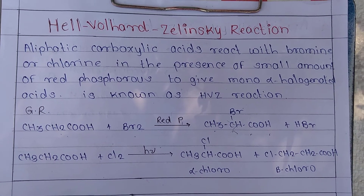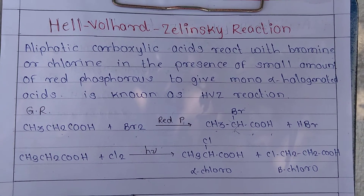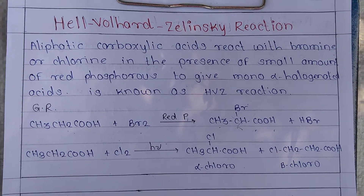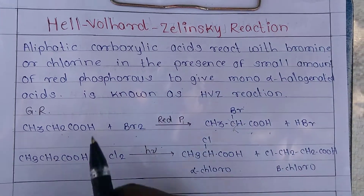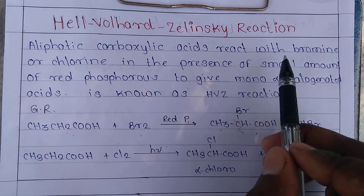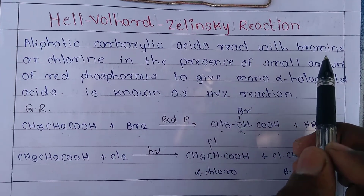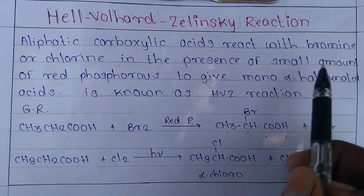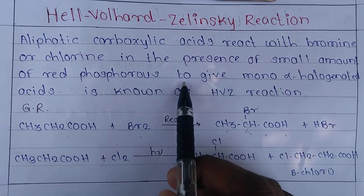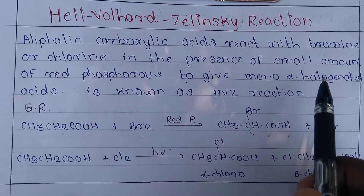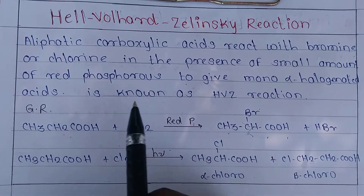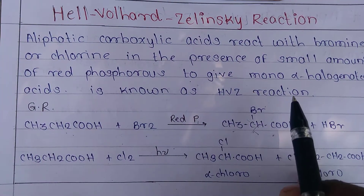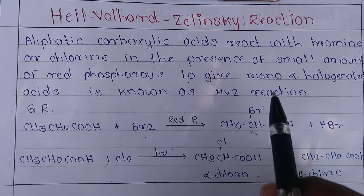Hello students. Today we are discussing the Hell-Volhard-Zelinski reaction. Aliphatic carboxylic acids react with bromine or chlorine in the presence of a small amount of red phosphorus to give mono alpha-halogenated acids — this is known as the Hell-Volhard-Zelinski reaction.